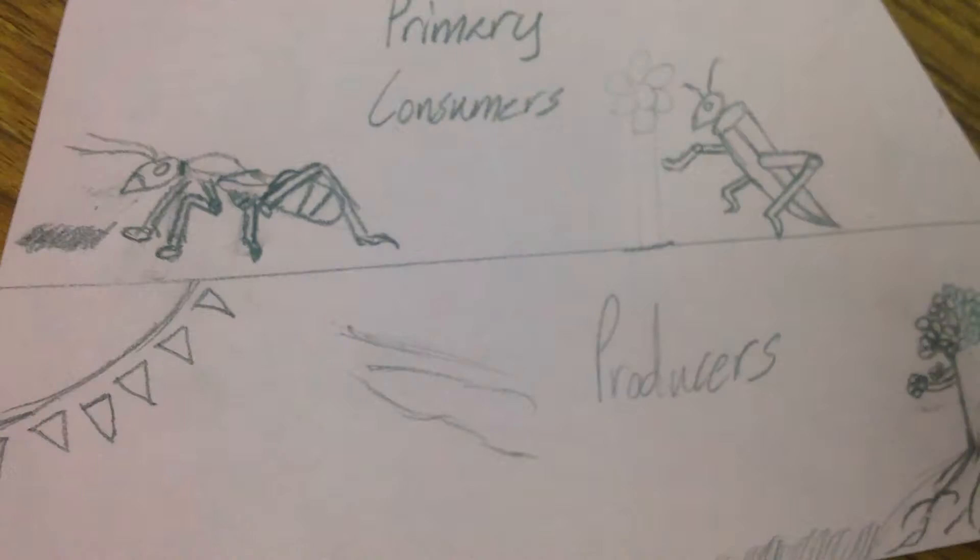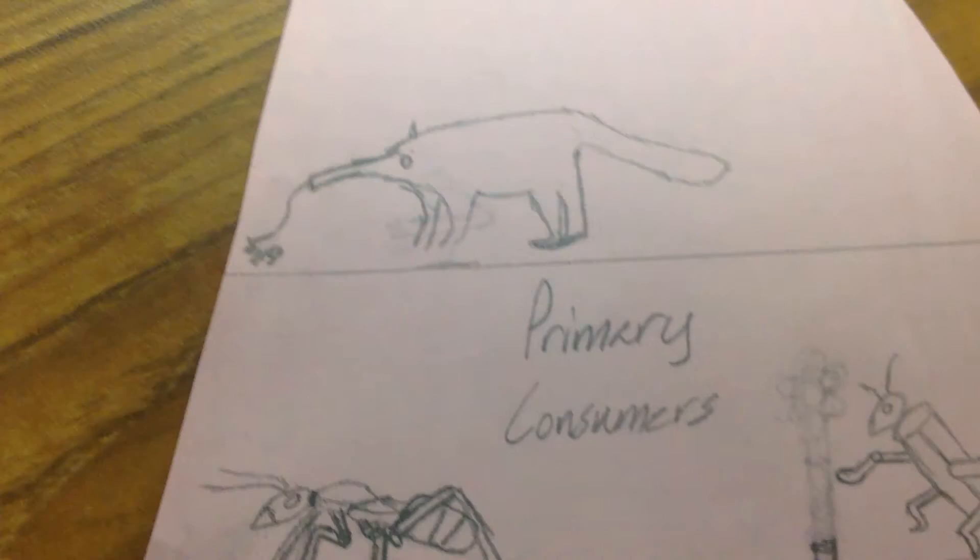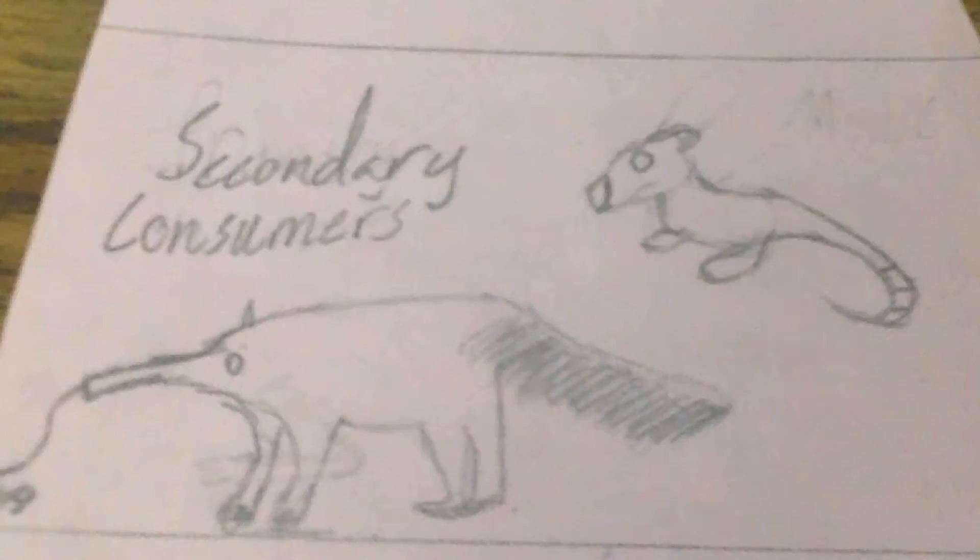Right now you can see that these are primary consumers that eat the producers, like crickets and ants. Next are secondary consumers like ant-eaters and mice.